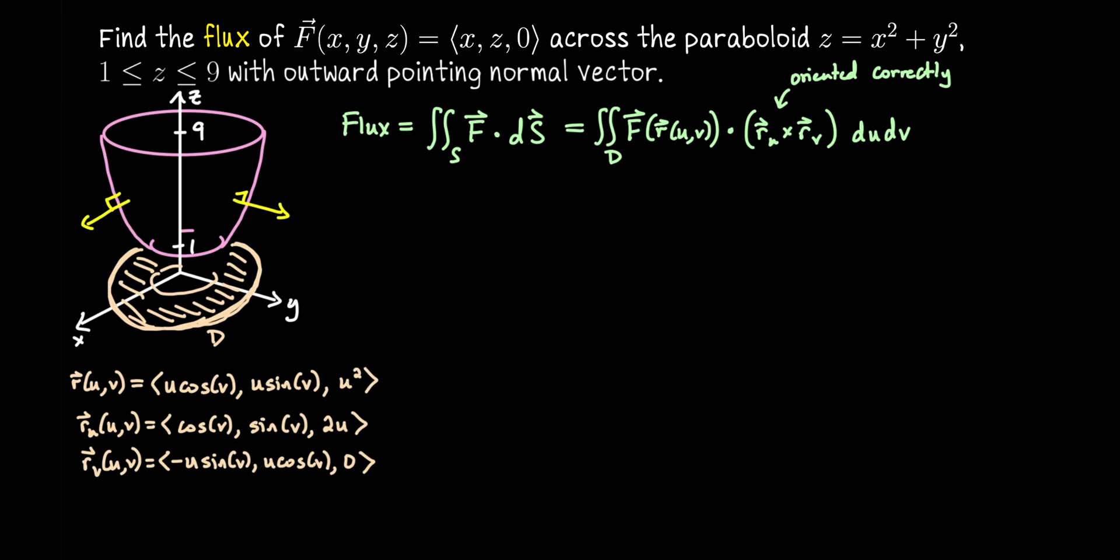Okay, let's take the cross product. r_u cross r_v, the first coordinate will be sine v times 0 minus 2u times u cosine v. So overall that's negative 2u² cosine v. The second component in our cross product will be 2u times negative u sine v minus cosine v times 0. Should look a lot like the first coordinate, and it does, just the trig function switched. So we have negative 2u² sine v.